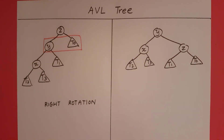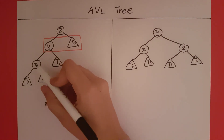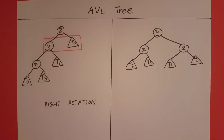This is how right rotation works in an AVL tree. In further videos, we will see something called double rotation, which has to be applied to another case in which X, Y and Z can appear. Thank you.